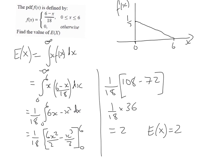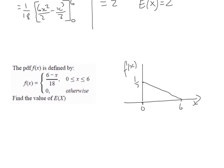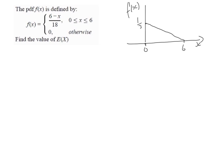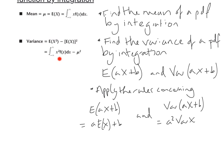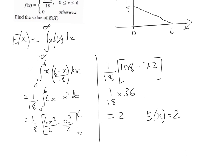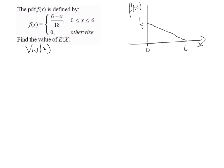Now I want to look at finding the variance of X for the same question. To find the variance of X, we multiply the function not by x but by x squared, and then subtract the mean squared. In our current example, the expectation of X is 2, so we're going to subtract 2 squared from the integral of x²·f(x).